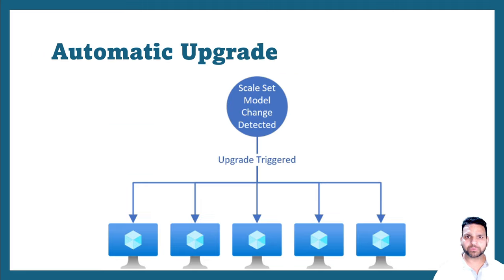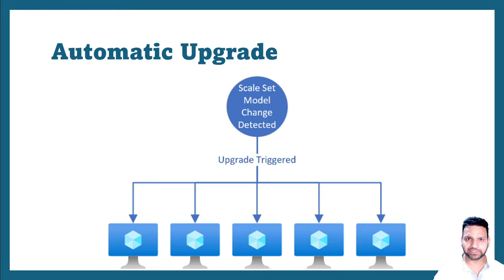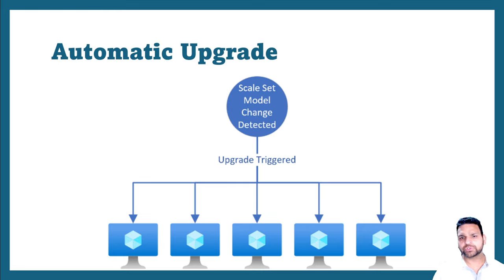If the virtual machine scale set upgrade policy is set up as automatic, any change detected in the virtual machine scale set will trigger an upgrade automatically on all the virtual machines simultaneously. This means the automatic upgrade option is not ideal for production environments. You can use it for development or test environments because you don't want all the virtual machines to be disrupted altogether.